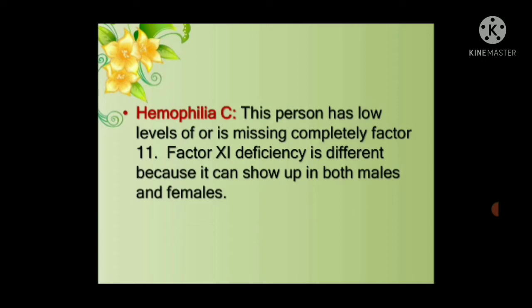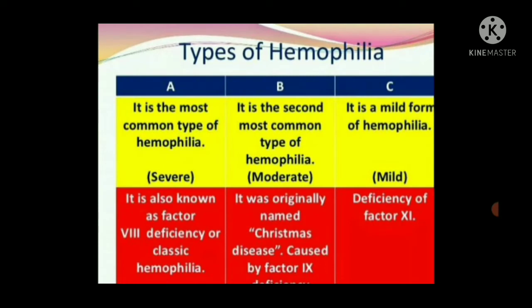Hemophilia C has been seen in both males and females in some ratio. In summary, the types are: Type A — most common, severe, factor 8 deficiency, also called classic hemophilia. Type B — second most common, moderate level, originally named Christmas disease, caused by factor 9 deficiency. Type C — mild form, due to deficiency of factor 11.